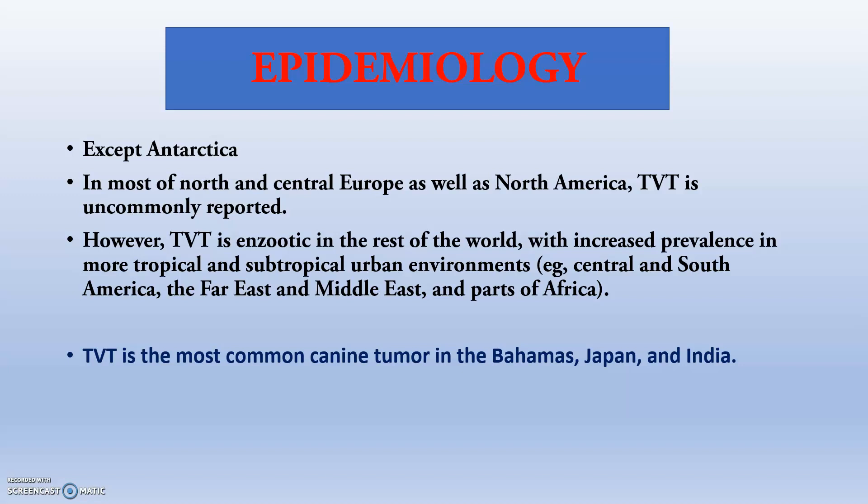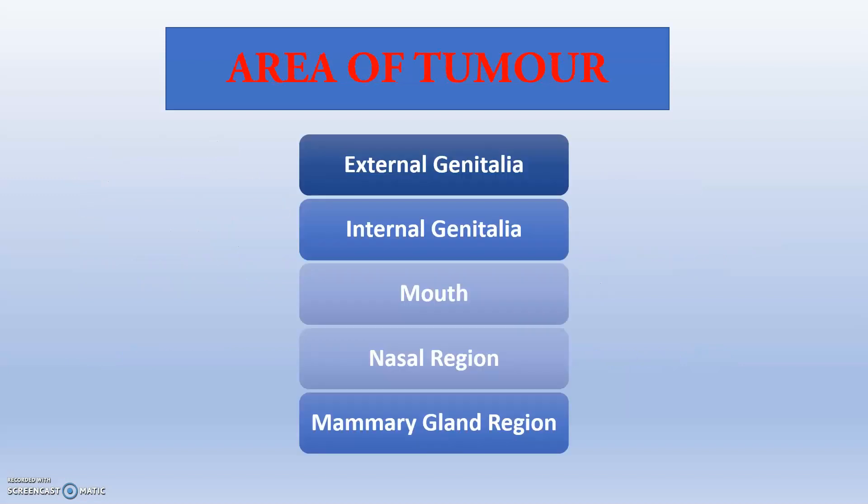Regarding epidemiology, TVT is not found in Antarctica and in most of northern Central Europe, as well as North America, TVT is uncommonly reported. TVT is the most common canine tumour in the Bahamas, Japan, and India. The areas affected by the tumour include external genitalia, internal genitalia, the mouth region, nasal region, and mammary gland region.